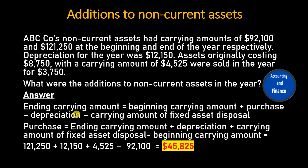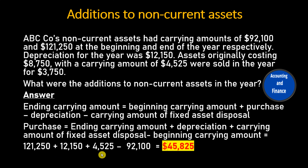Answer. Ending carrying amount equals beginning carrying amount plus purchases minus depreciation minus carrying amount of fixed asset disposal. Therefore, purchases equals ending carrying amount plus depreciation plus carrying amount of fixed asset disposal minus beginning carrying amount, which equals $121,250 plus $12,150 plus $4,525 minus $92,100, giving additions of $45,825.